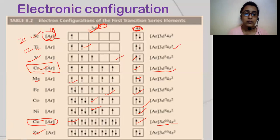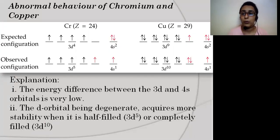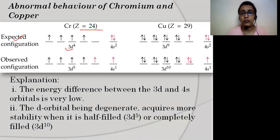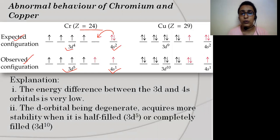So why do chromium and copper show abnormal behavior? The electronic configuration of chromium (atomic number 24): the expected configuration is [Ar] 3D4 4S2, but the actual observed configuration is 3D5 4S1. This means one electron from the 4S orbital shifts to the 3D orbital, so the configuration becomes 3D5 4S1.